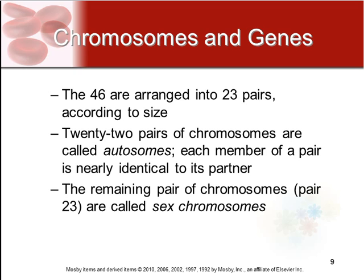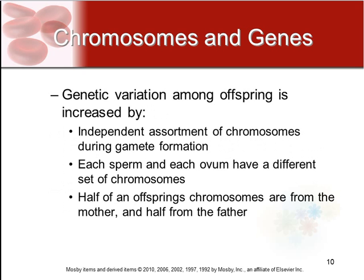The remaining pair are called the sex chromosomes. Genetic variation in offspring is related to the fact that half the chromosomes come from one parent and the other half from the other. There is an independent assortment of chromosomes during gamete formation, meaning each sperm and each ovum has a different set of chromosomes. Half of the offspring's chromosomes are from each parent, but they can be any one of the chromosomes from each parent.